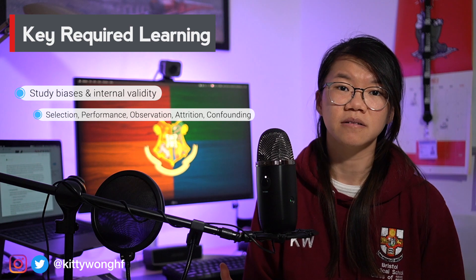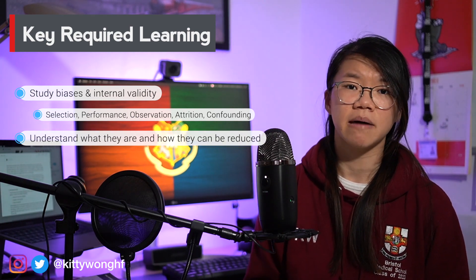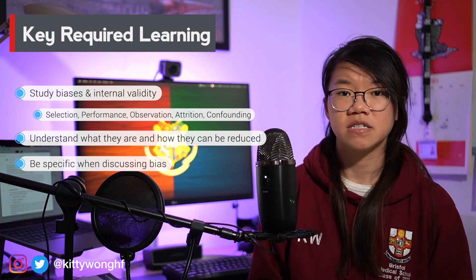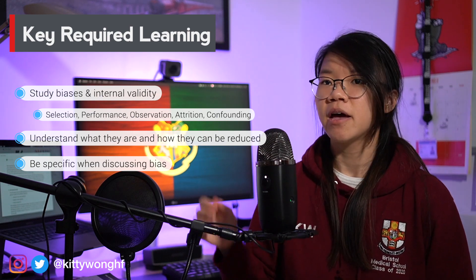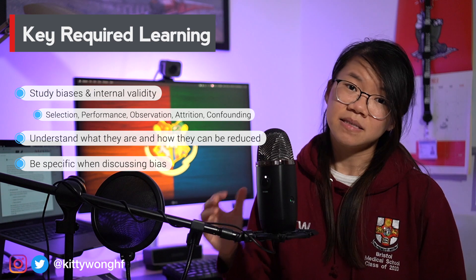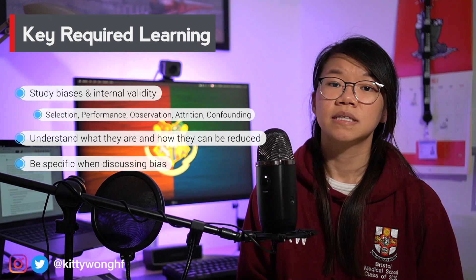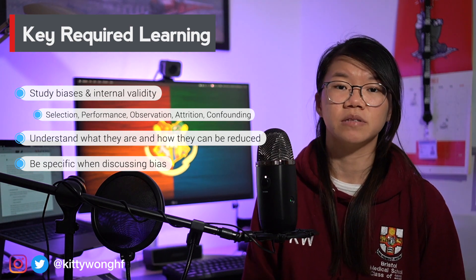There are many sources of bias to consider, but the main ones you should address — especially in a randomized controlled trial — are selection bias, performance bias, observational bias, attrition bias, and confounding. It's really important that you read up on this in your own time and understand each type of bias and how they can be reduced. When discussing bias in the interview, make sure you're as specific as possible. Don't just say 'this study is sufficiently randomized so it reduces bias' — instead say something like 'the double blinding in this trial has reduced performance and detection bias.'